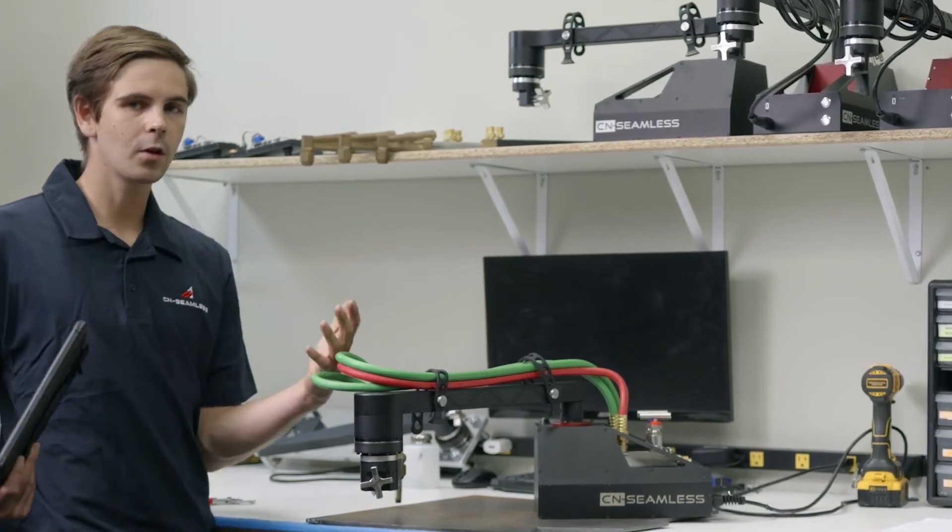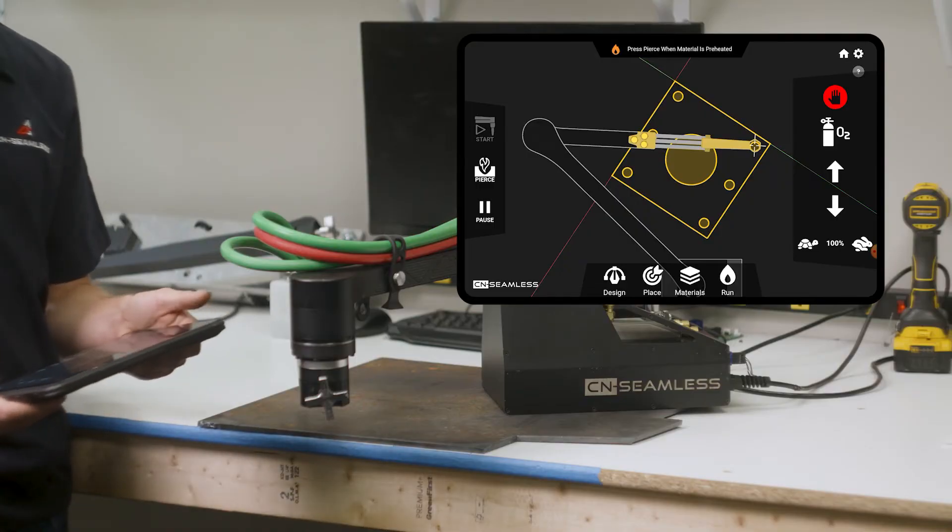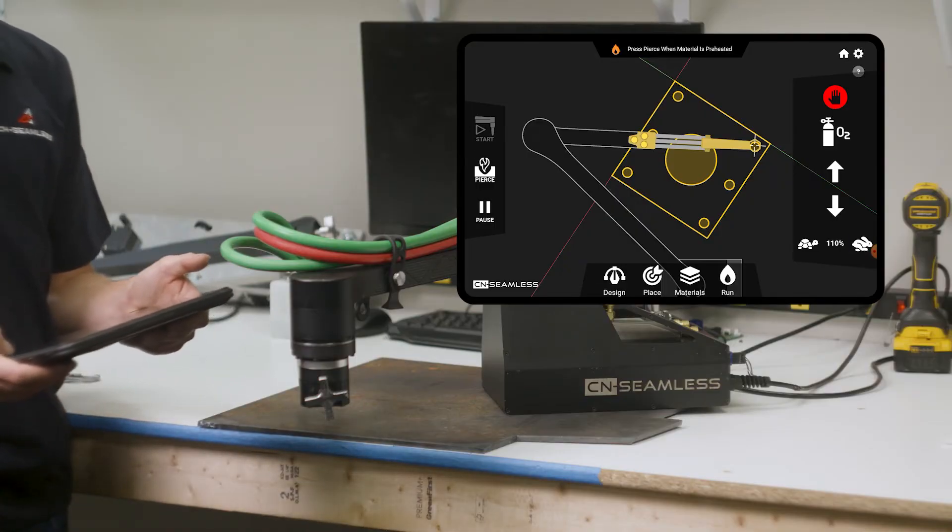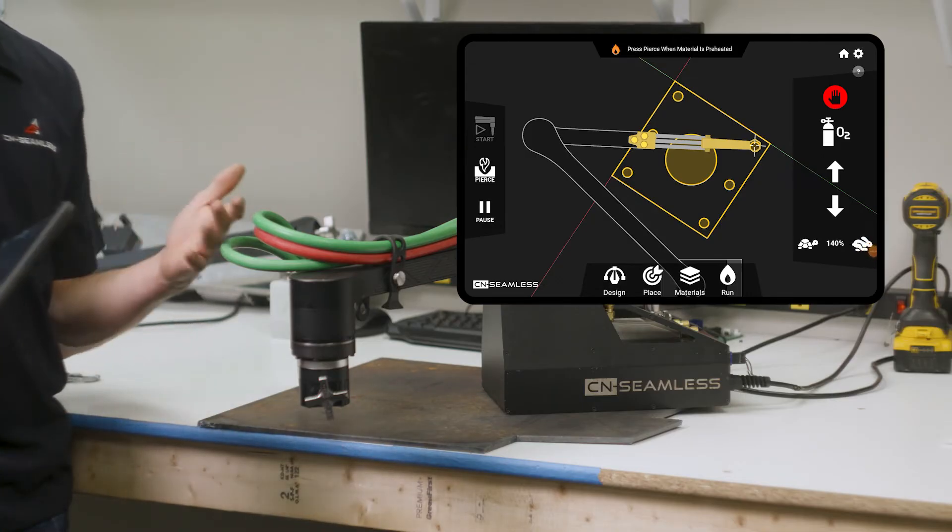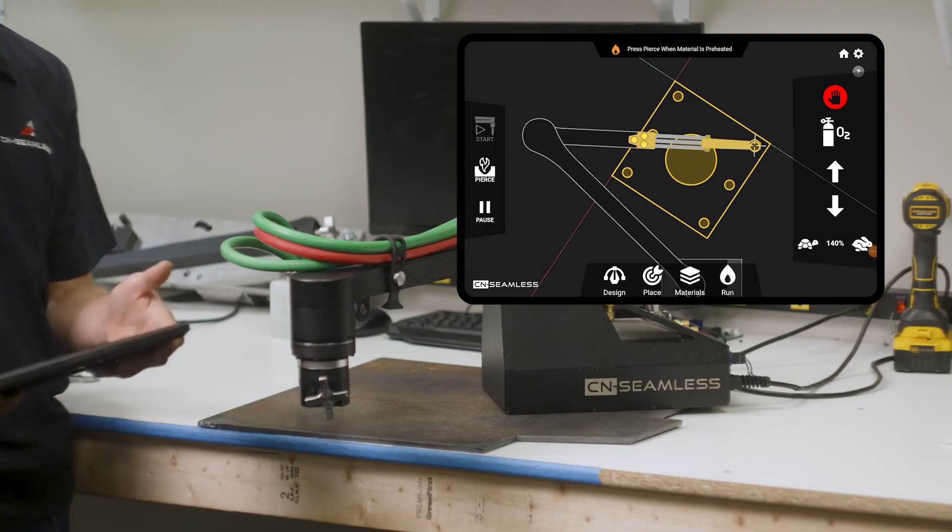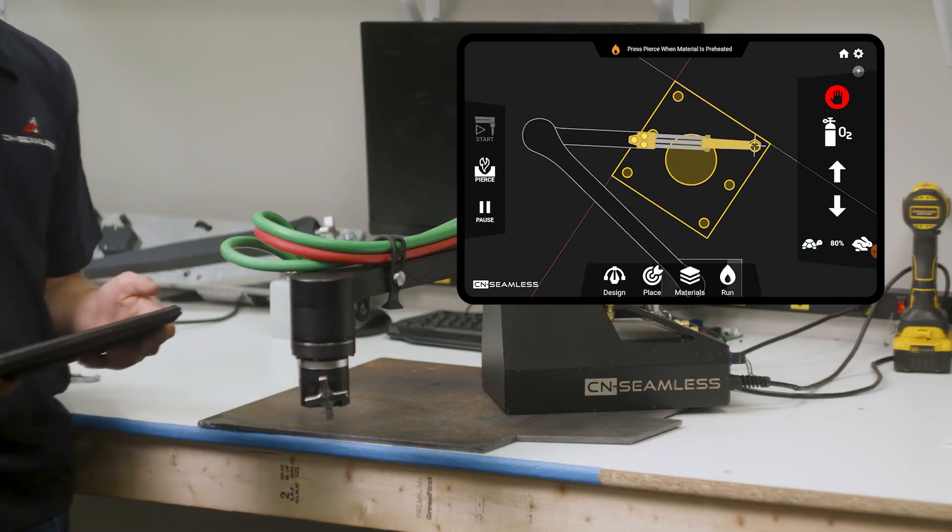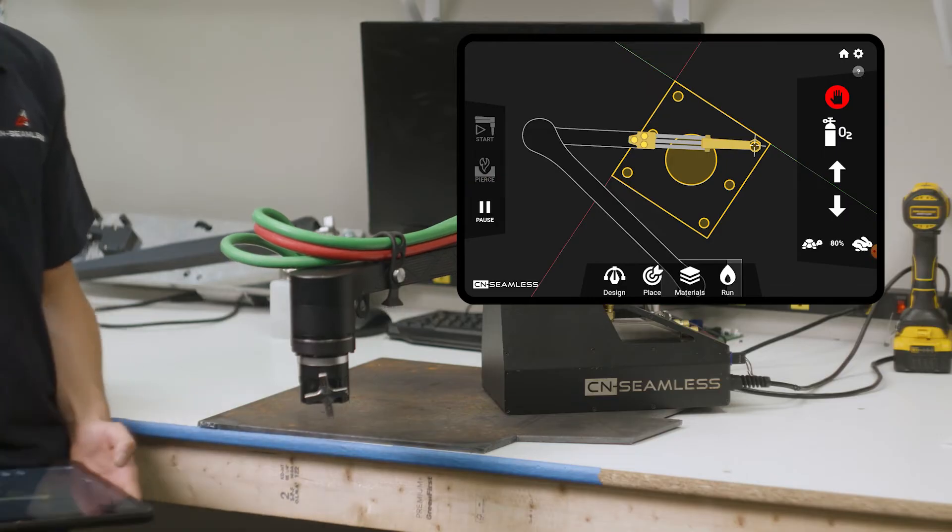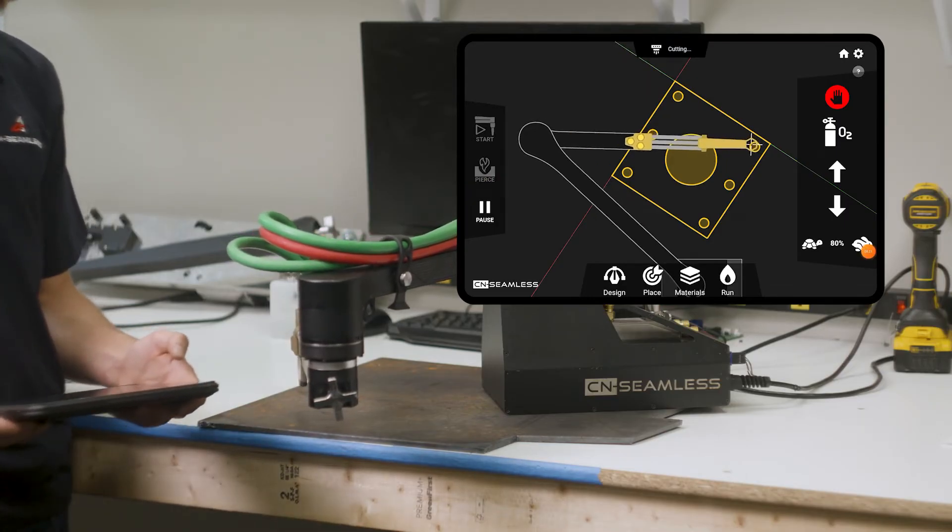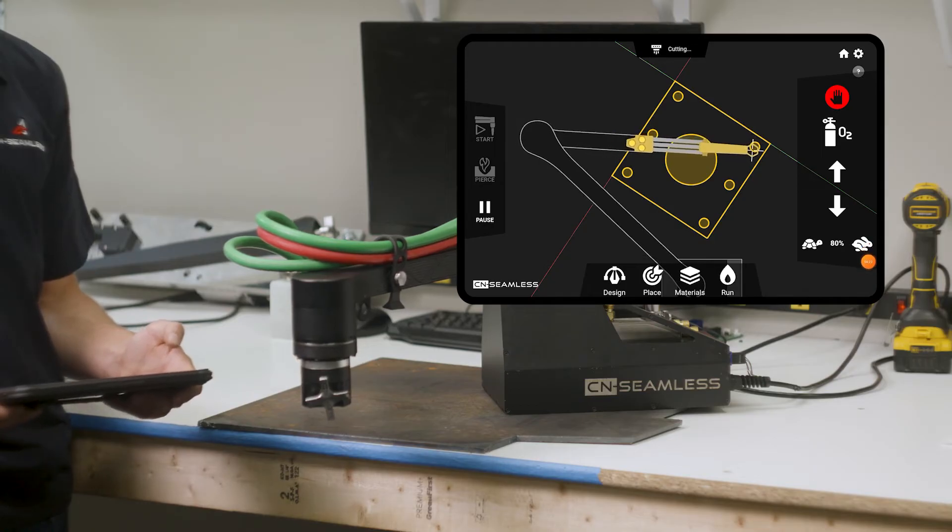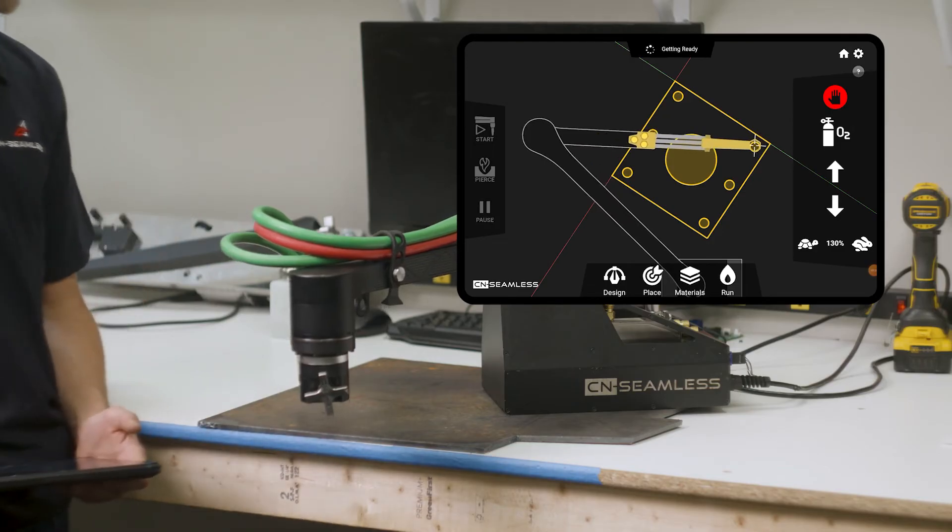You can also speed up and slow down the cut during the process. And that's going to be down here with the little tortoise and hare icons. So right now I'm going to be at 140% of the feed you set originally. So that's going to speed it up a little bit. Or you can speed it back down all the way to zero inches per minute. Click pierce. It's going to pierce the material. And you can see it's going pretty slow now. So I'm going to go and speed that thing back up.